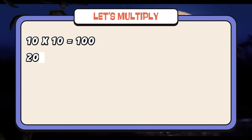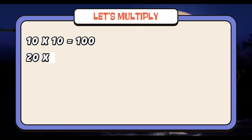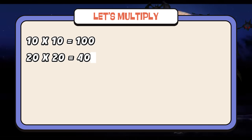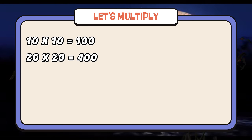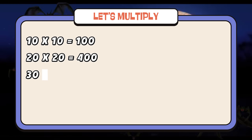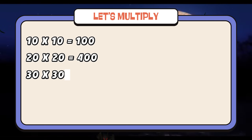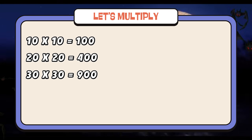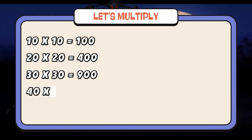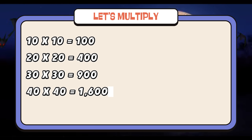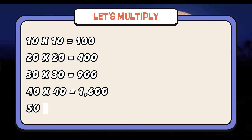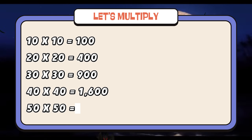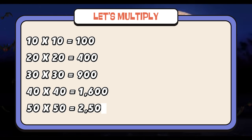20 times 20 is equals to 400. 30 times 30 is equals to 900. 40 times 40 is equals to 1,600. 50 times 50 is equals to 2,500.